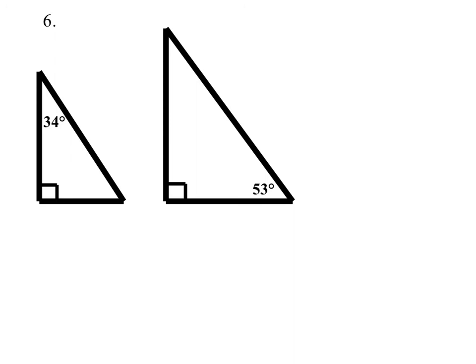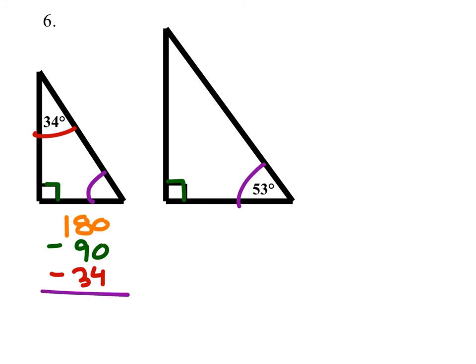Number six: same idea as the last one. We've got a 53-degree angle, a 34-degree angle, and two 90-degree angles that match. Let's figure out the missing angle: we take 180, subtract the 90-degree angle and also the 34-degree angle. Does it equal 53 degrees? As it turns out, that is 56 degrees — which is not the same as 53 degrees. So they are not similar.